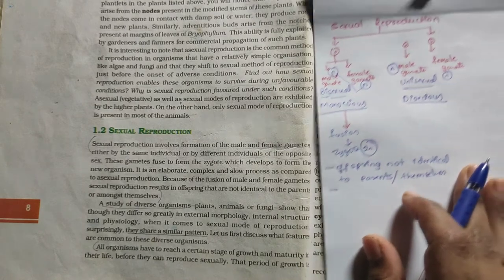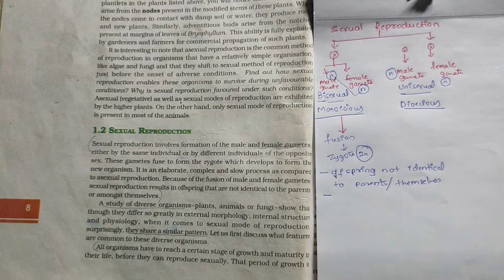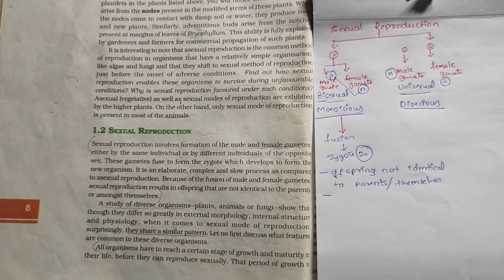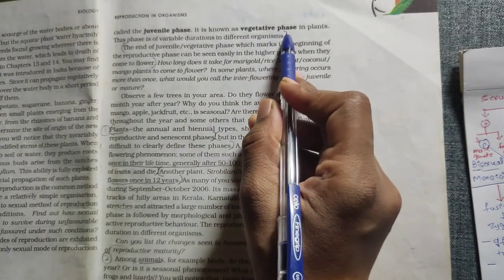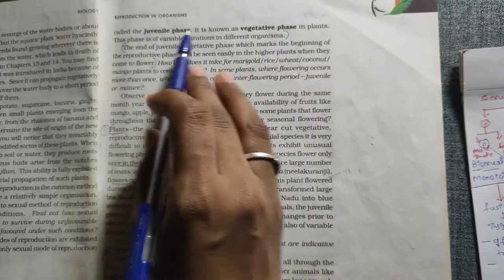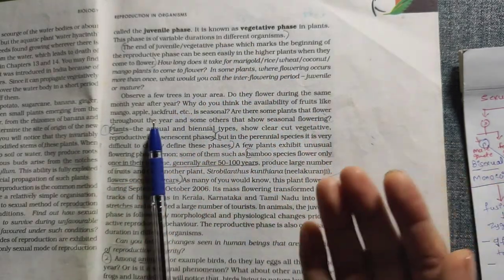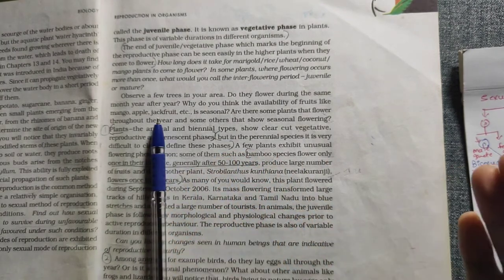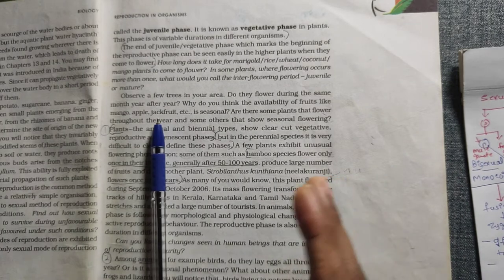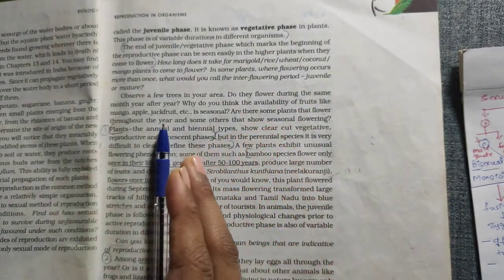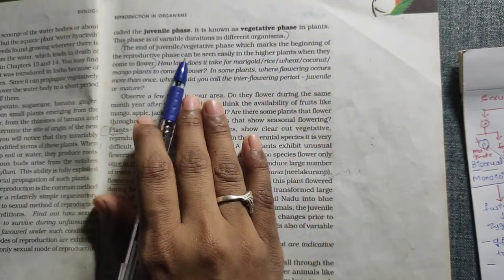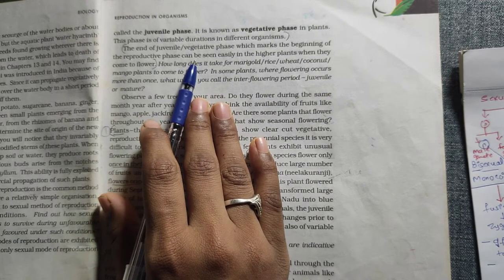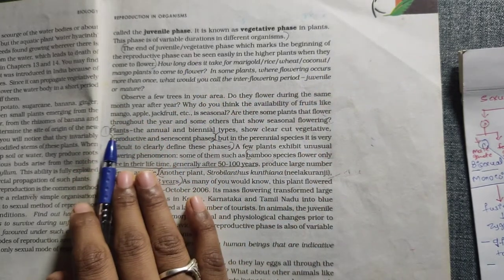When an organism is born, it does not immediately produce gametes. It first grows vegetatively — in plants and animals, they first mature and grow. This phase is called the juvenile phase, also known as the vegetative phase in plants. This phase is of variable duration in different organisms — some organisms live for more than a hundred years and some complete their cycle within a month. At the end of the vegetative phase, reproductive phase begins with physical changes.